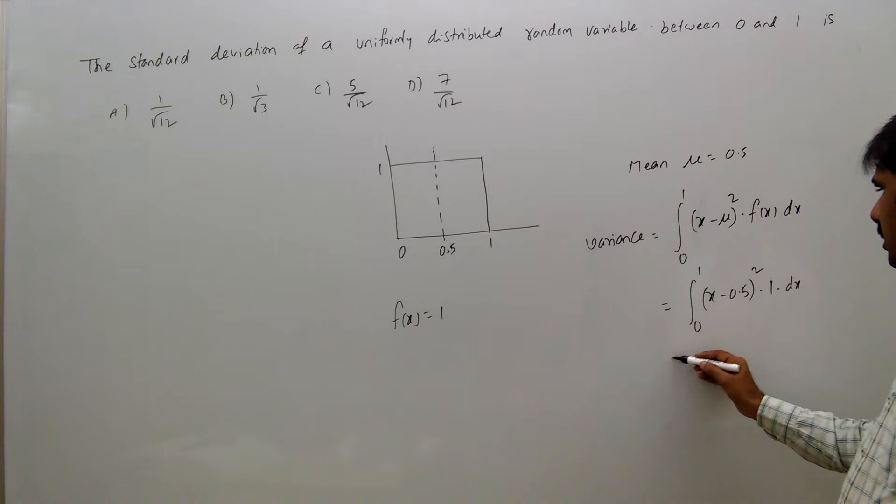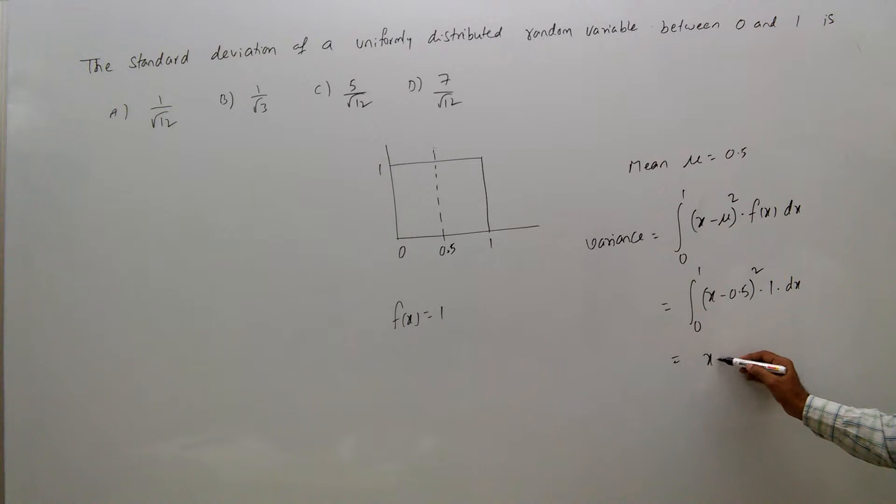This equals [(x - 0.5)³/3] evaluated from 0 to 1.